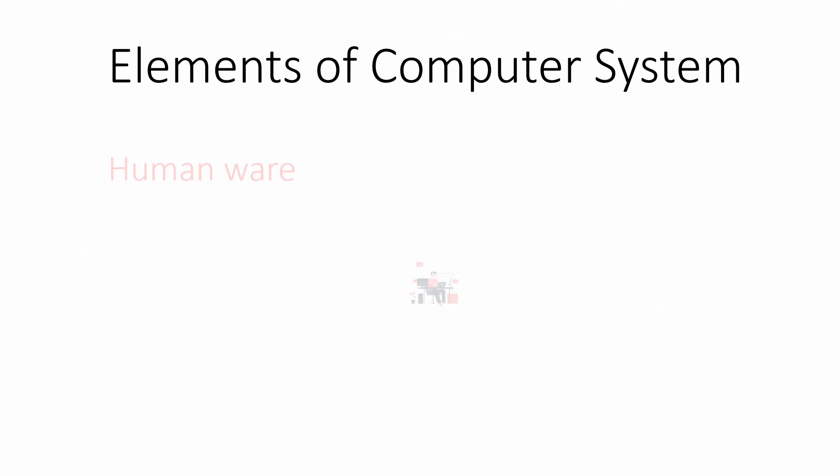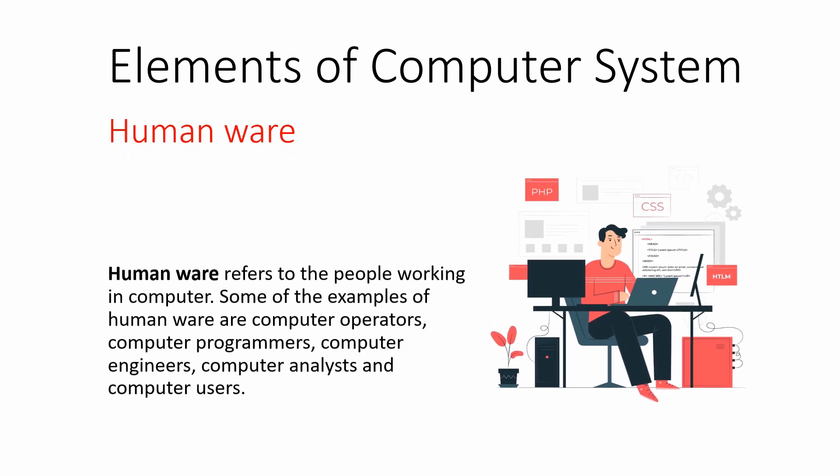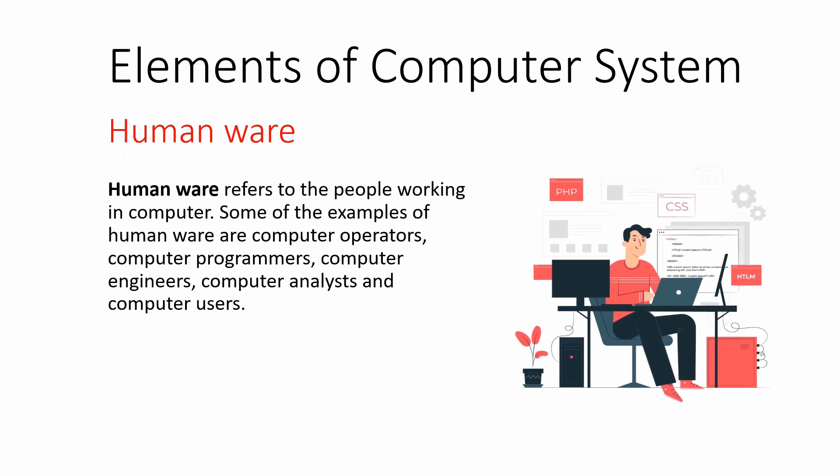The next element of a computer system is humanware. Humanware are the people working with computers. They may be the computer operator, programmers, computer engineers, analysts, and simply the users of the computer. So they are also one of the elements of the computer system.